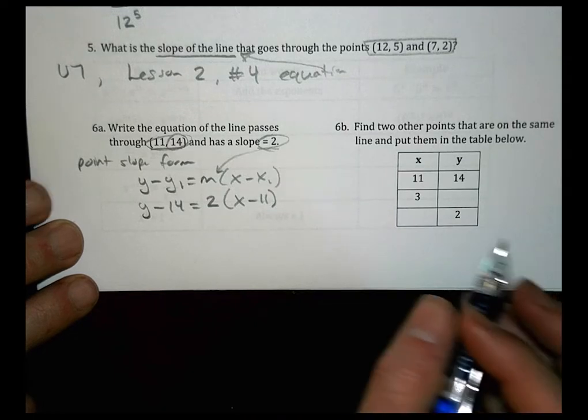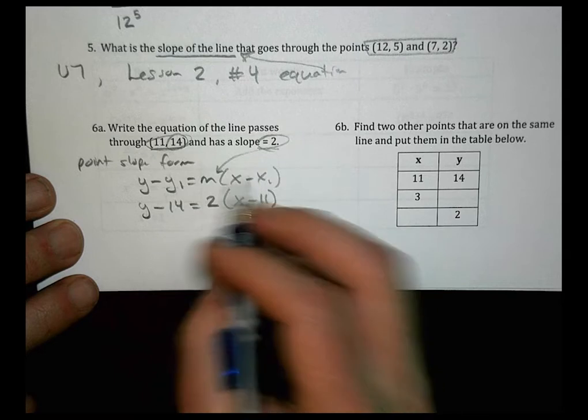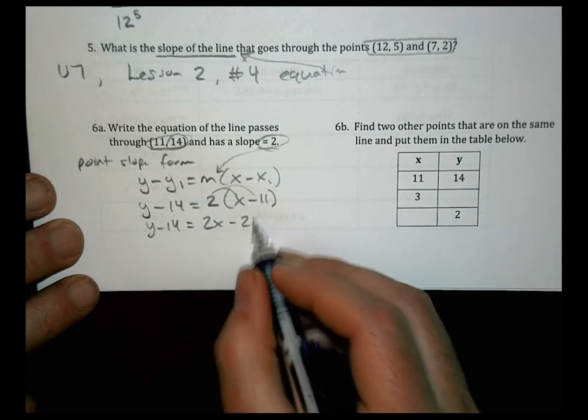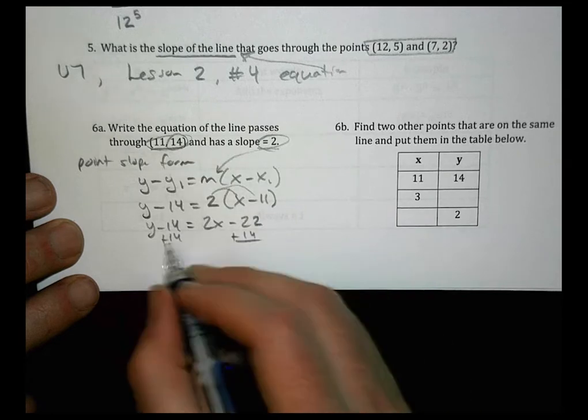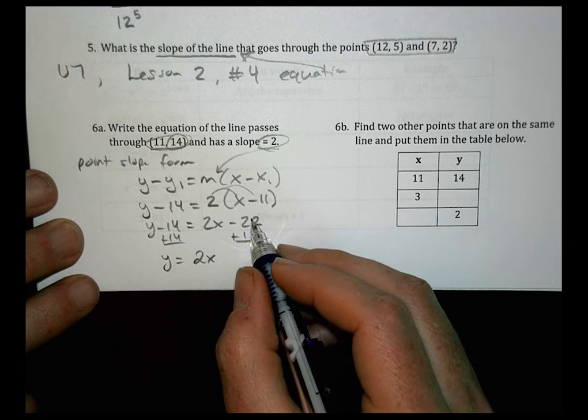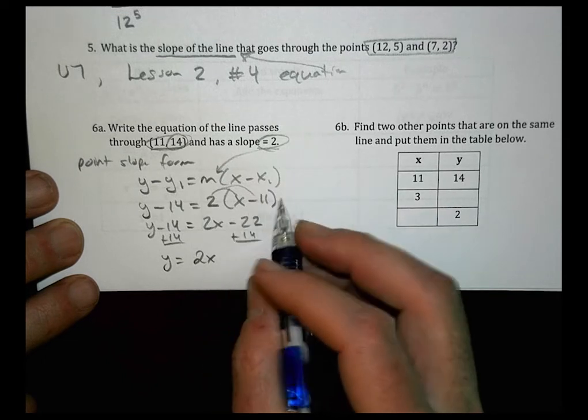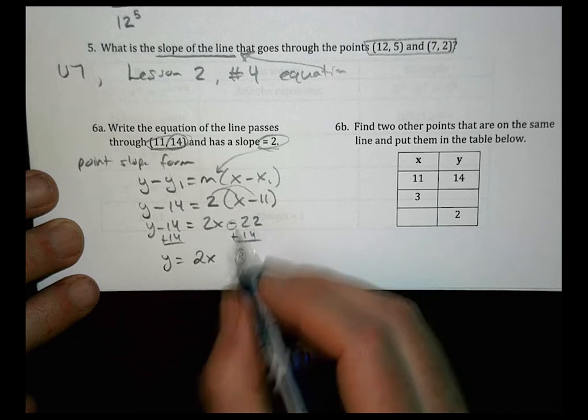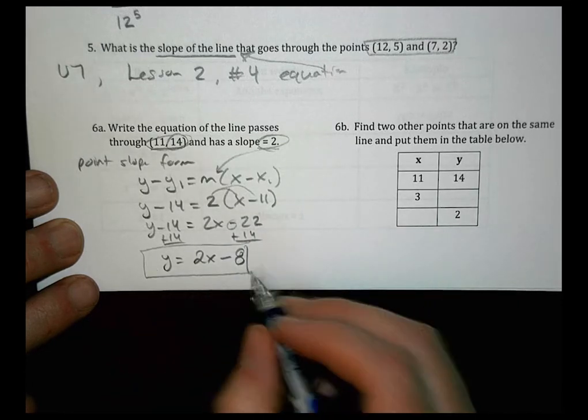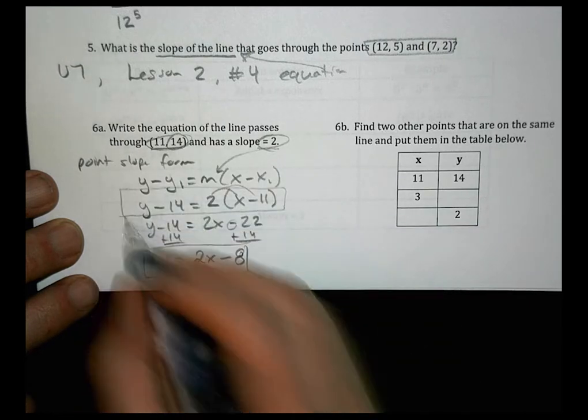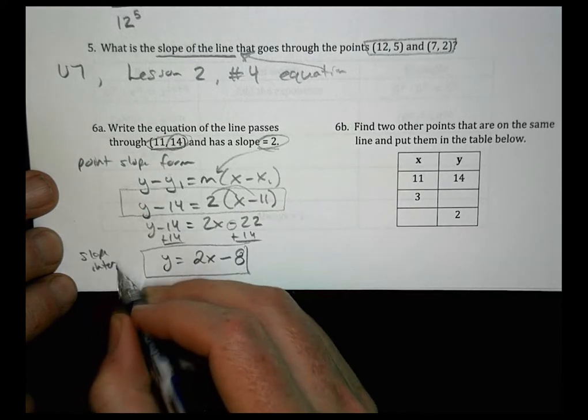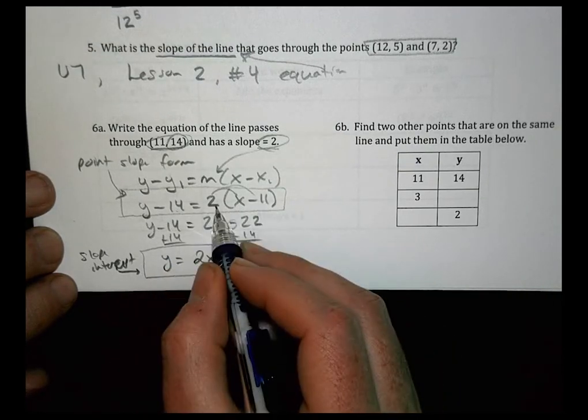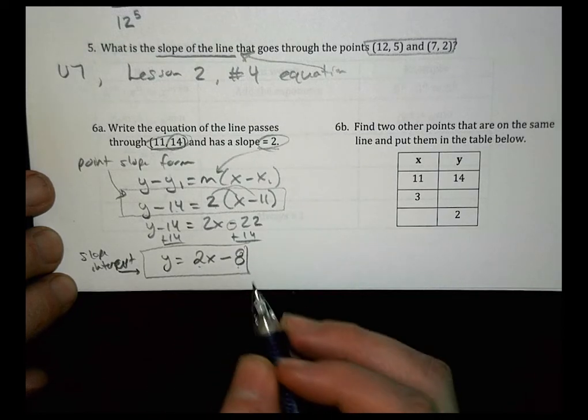Now from here, what you're going to do is distribute and solve. So let's do this together. We have Y minus 14 equals 2 times X is 2X. 2 times negative 11 is negative 22. I can add 14 to both sides. So that Y equals 2X. And then 22 and 14 different operations there. So I find the difference. 22 minus 14 is 8. And 22 is a larger absolute value, so it's minus 8. So that becomes the equation. This, like I said before, is also an acceptable equation. This is just in slope-intercept form here. And this is point-slope form there. And the reason is this gives us a point and a slope, and this gives us a slope and the Y-intercept.